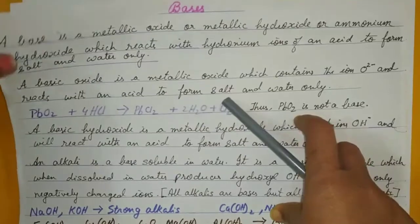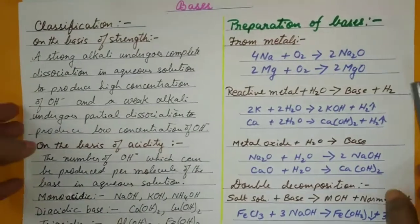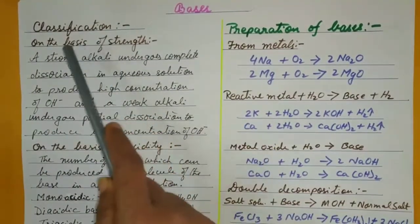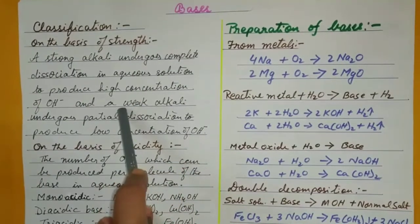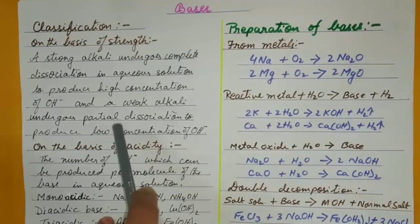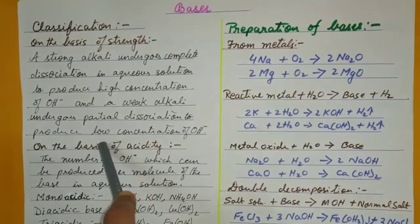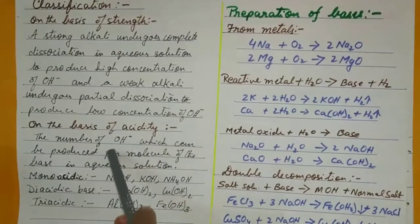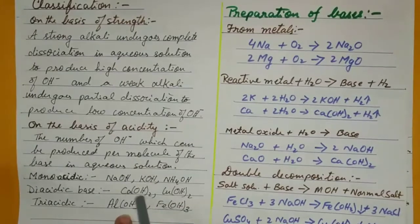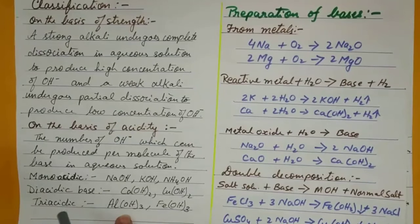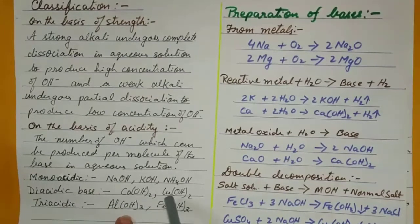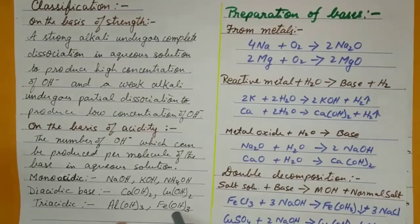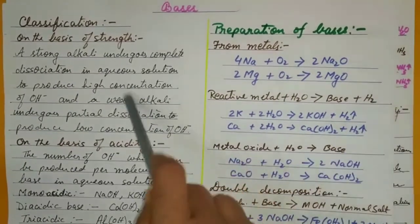Now let's go to classification of bases. On the basis of strength: a strong alkali undergoes complete dissociation, while a weak alkali has a low concentration of hydroxyl ion. On the basis of acidity — the number of hydroxyl ions produced per molecule of base in aqueous solution — bases are monoacidic, diacidic, or triacidic. Monoacidic: sodium hydroxide, potassium hydroxide, ammonium hydroxide (one OH⁻). Diacidic: calcium hydroxide, copper hydroxide. Triacidic: aluminium hydroxide, ferric hydroxide.